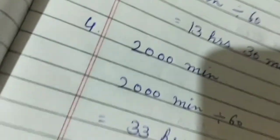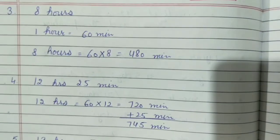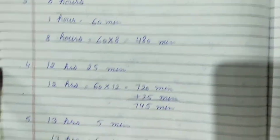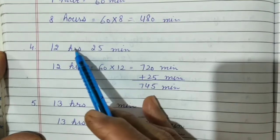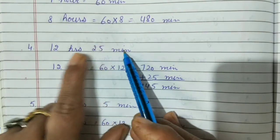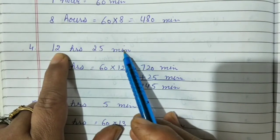Now question number 4. Question number 3 has only hours, you will multiply by 60 only. Question number 4, the question is in hours and minutes. The minutes you will add last.